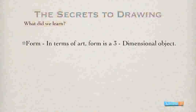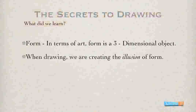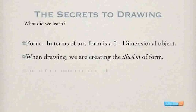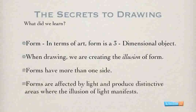What did we learn in this video? First, in terms of art, form is a three-dimensional object. Second, when we are drawing, we are creating an illusion — the illusion of form. In order to do this, forms have more than one side, and we need to include that in our drawings. We also learned that forms are affected by light and produce distinctive areas where the illusion of light manifests. In the next video, we're going to explore value and the importance of a light source in a drawing.